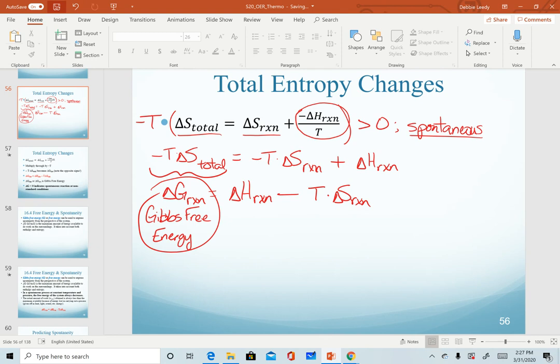The key thing to recognize in this equation: realize in our initial equation, our total entropy needed to be a positive value to be spontaneous. But now that I've multiplied through by my negative T, in order for a reaction to be spontaneous if we're calculating delta G, this must now be a negative quantity. That is very important to know, to learn, and to memorize for this reaction. Delta G quantities must be less than zero or negative in order to be spontaneous reactions.